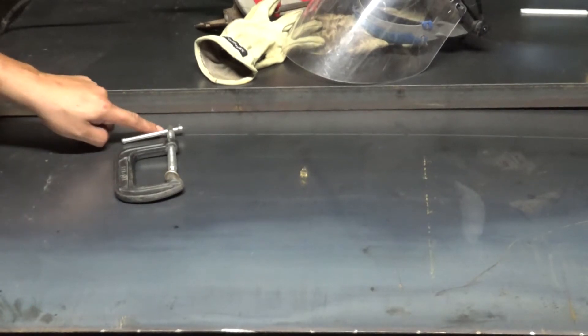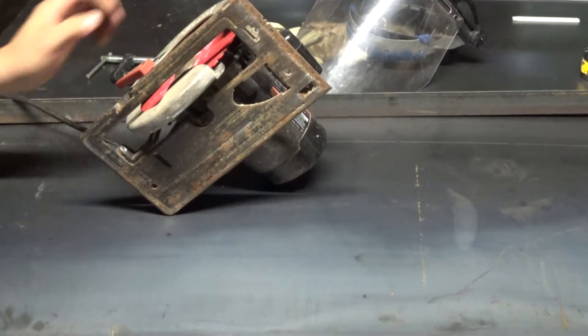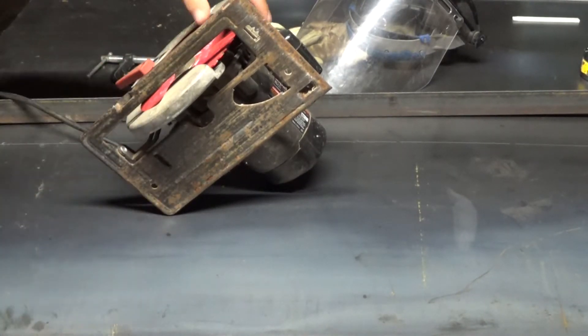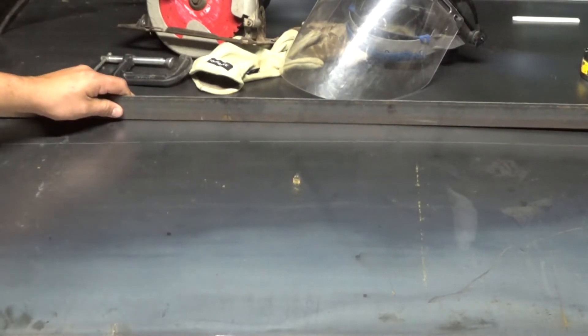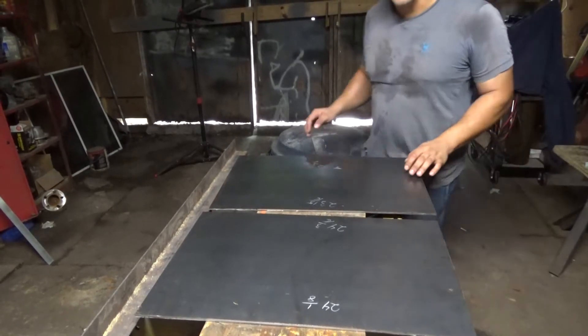Alright, so I kind of have it marked out, but I'm not really going to use that line. What I have to do is I already know my saw's base leaves an inch and a half, so I'm just going to set this back an inch and a half more than I need.